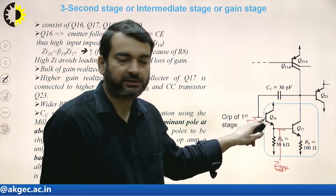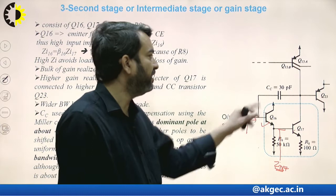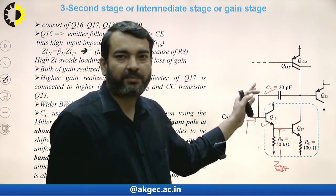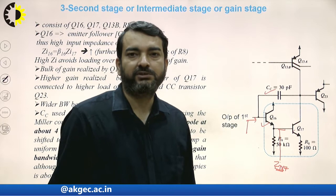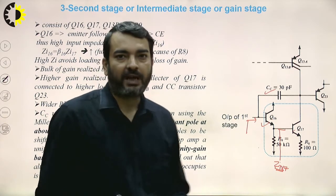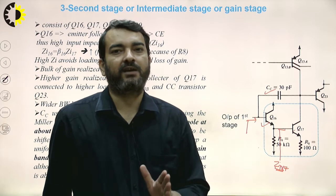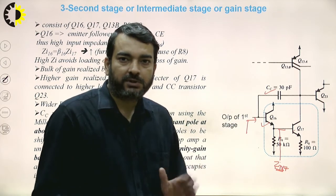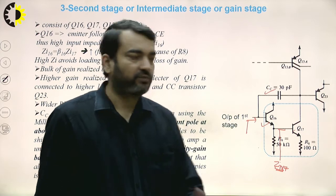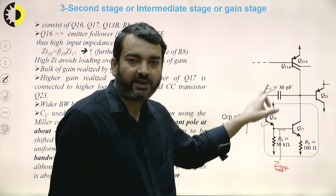This common collector and common emitter combination, also called emitter follower stage, provides a wider bandwidth. A capacitor CC having a value of 30 picofarads is used for Miller compensation. Using Miller compensation technique, we create one dominant pole at approximately 4 Hz. There is a concept of pole splitting in which all other poles are shifted to higher frequencies. This gives a roll-off rate of 20 dB per decade because of the dominant pole created by capacitor CC.